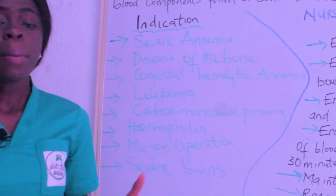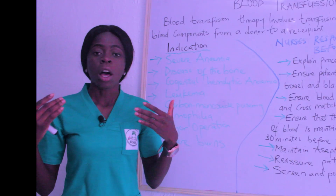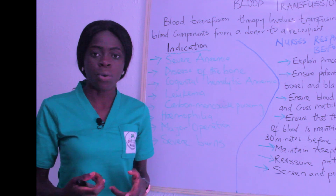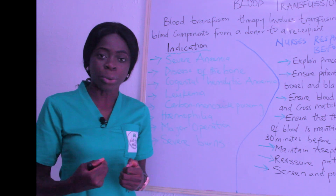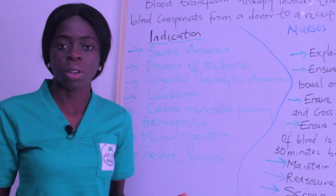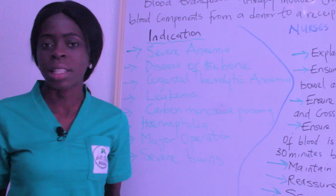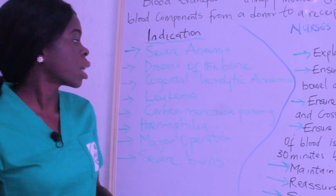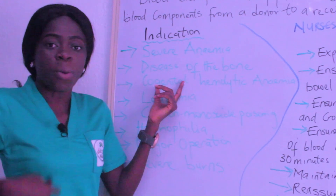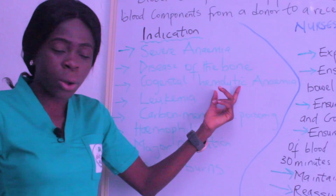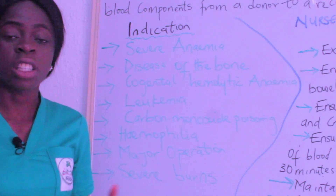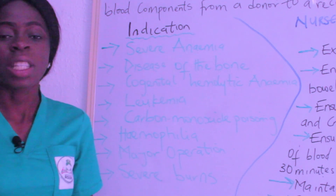The second indication is disease of the bone marrow. Blood cells are produced from the bone marrow, so when there is a disease of the bone, the bone marrow is unable to produce enough blood cells, making blood transfusion very important. The third is congenital hemolytic anemia — when a child is born with this condition, transfusion is required immediately.